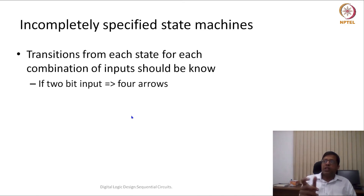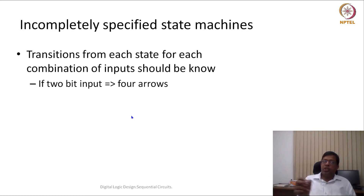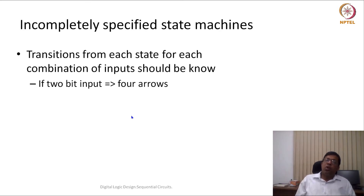In all our examples the number of inputs is only one, and this particular input only had two values, 0 and 1. If instead of one input there were two inputs, then we have to find all transitions for all four possibilities. For example, if inputs are A and B, we need transitions for AB = 00, 01, 10, and 11. That's how a state machine would be complete.